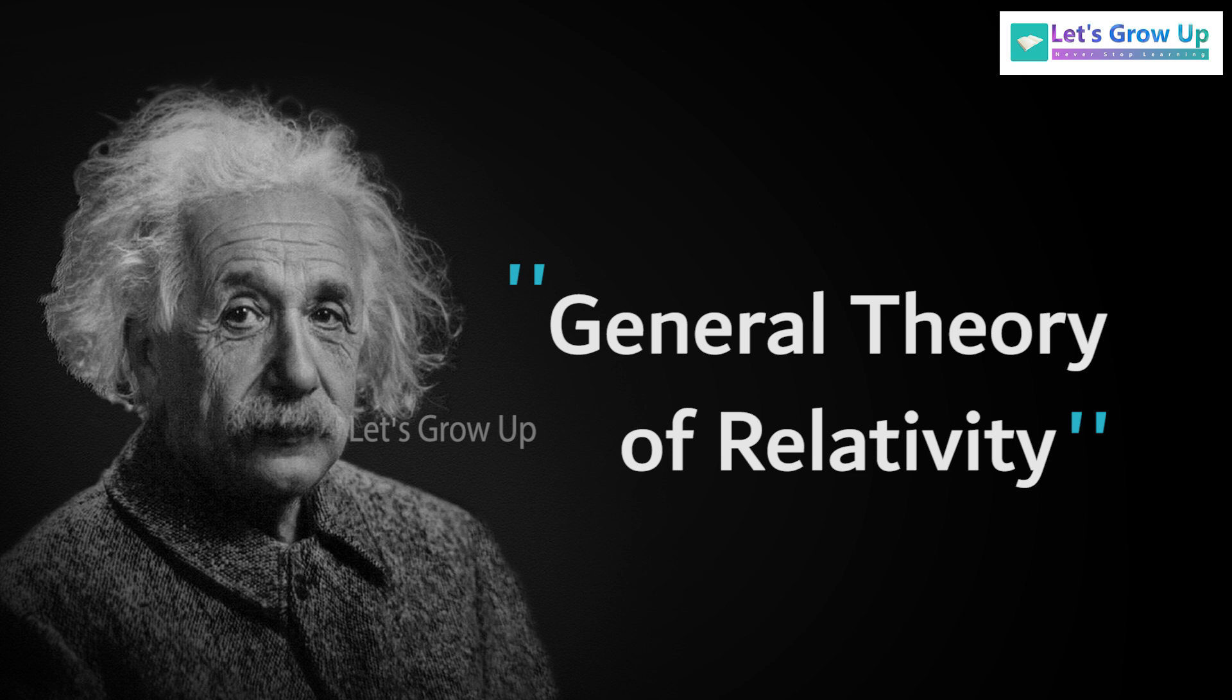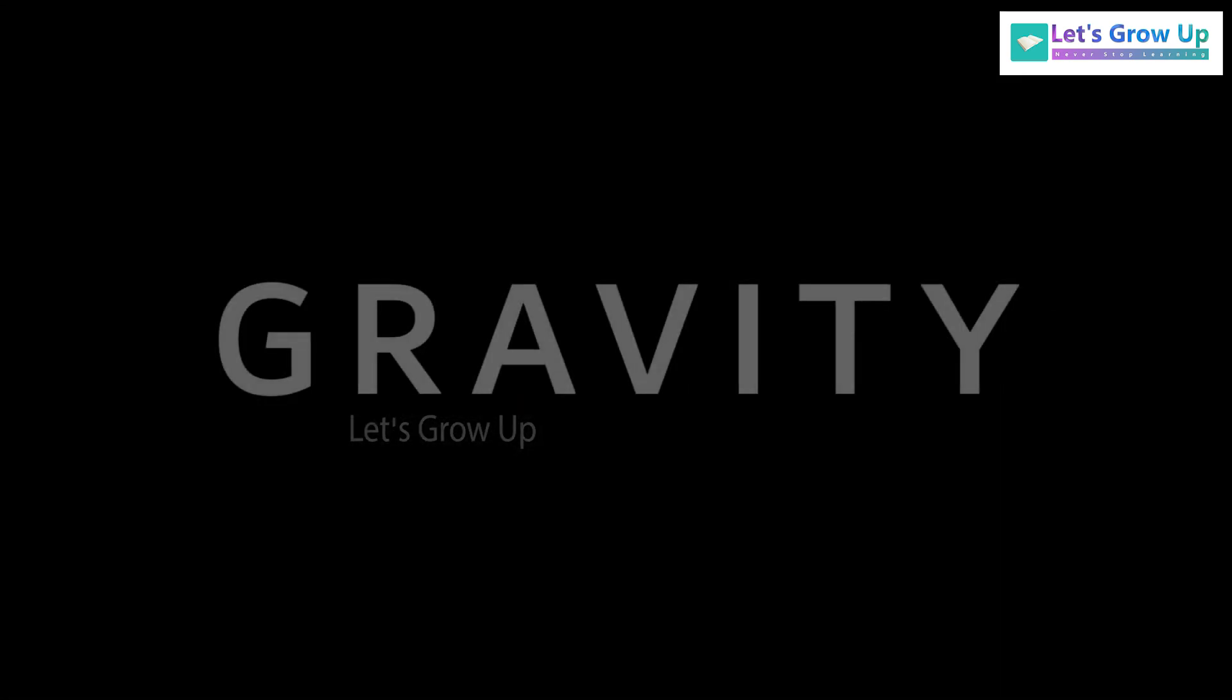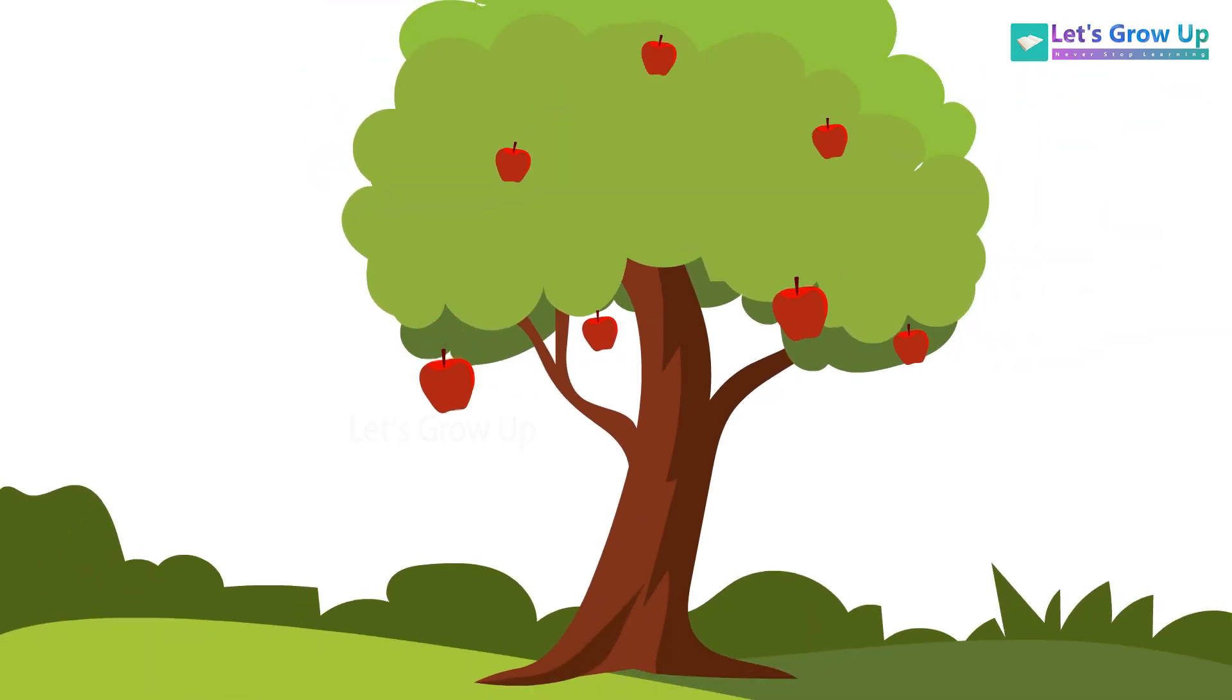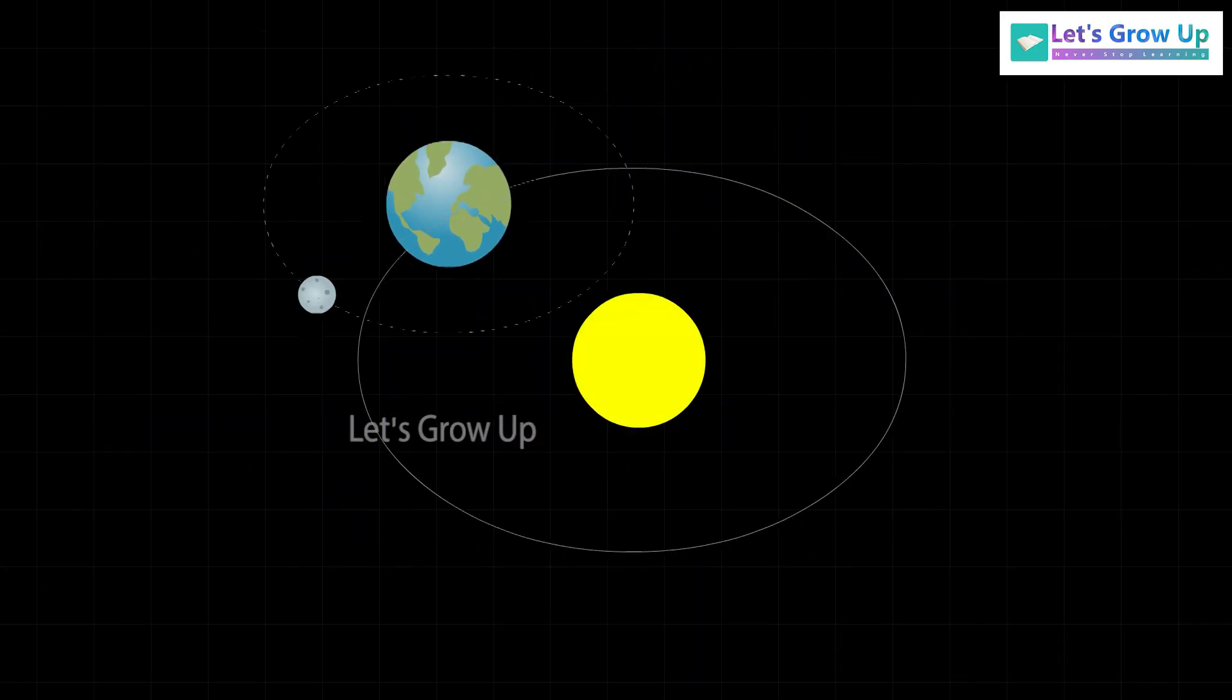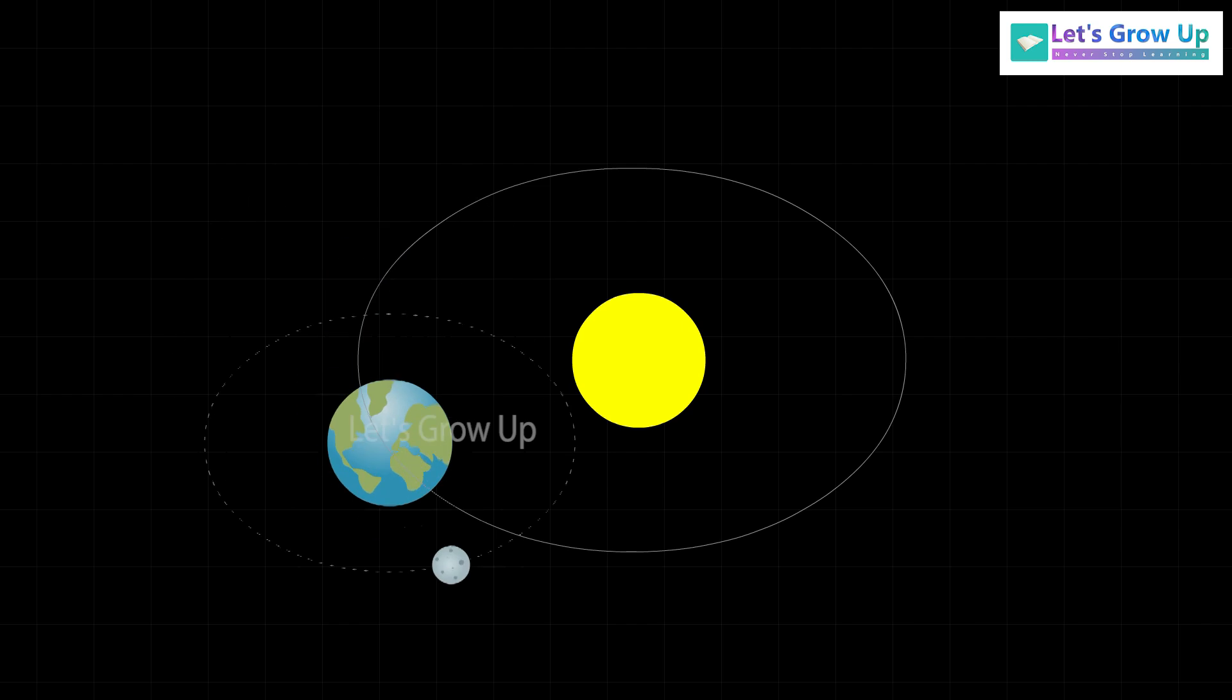What is the general theory of relativity? Basically it's a theory of gravity. We know the apple fell on the ground, the moon revolves around the Earth, and the Earth revolves around the sun because of gravity.